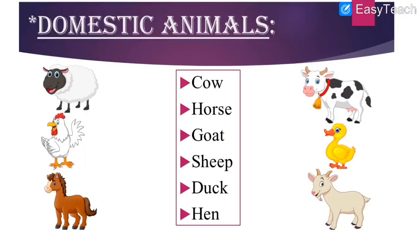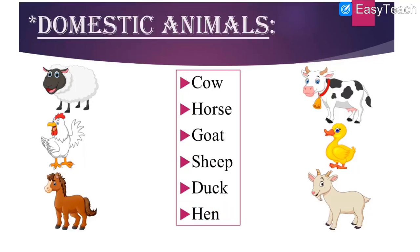Our next worksheet — a very interesting game. Domestic animals: the animals which can be tamed and kept in farms or houses are domestic animals. Here are the names of some domestic animals: cow, horse, goat, sheep, duck, hen. Here are pictures of six animals and names of six animals on the left and right hand sides. We have to match the names with the pictures.